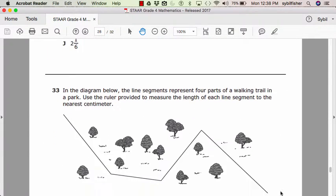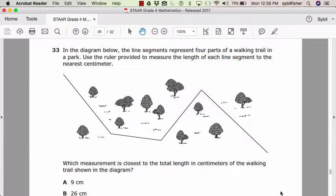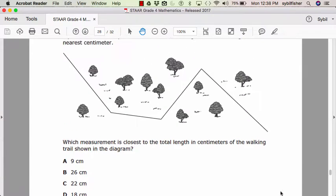In the diagram below, the line segments represent four parts of a walking trail in the park. Use a ruler provided to measure the length of each line segment to the nearest centimeter. Which measurement is closest to the total length of the walking trail shown in the diagram?